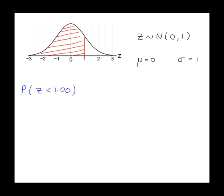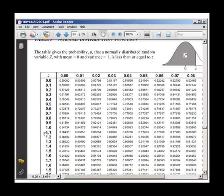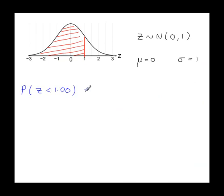Back to the tables. We have 1.0 here, that's the first decimal place. The second decimal place is also 0, and that takes us to 0.84134. That's about 84%, so 84% of that distribution was shaded.